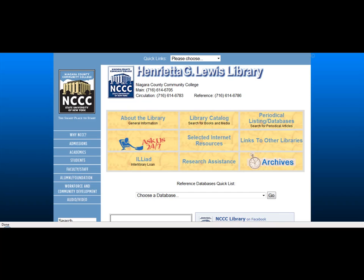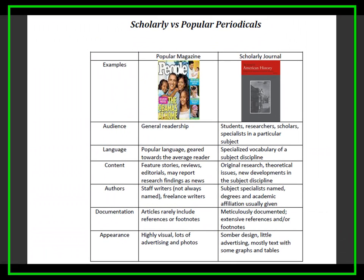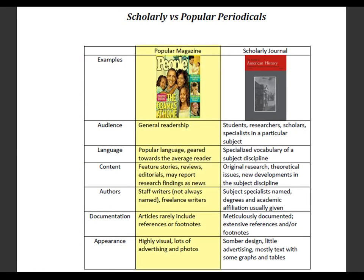Most databases contain both popular and scholarly materials. Popular materials include magazine and newspaper articles. They are geared for general readers, written in plain, simple language, and rarely include references or footnotes.